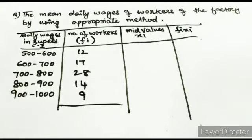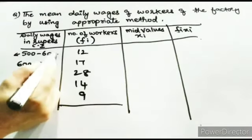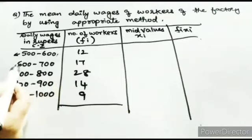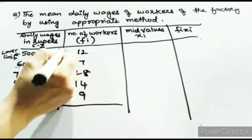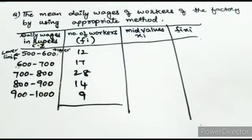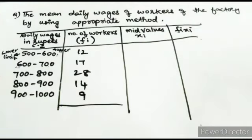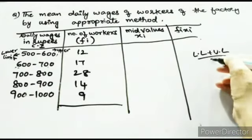How do you find the mid values? Here, this is called the lower limit (LL) and this is called the upper limit. The upper limit of the first observation becomes the lower limit of the second observation. The mid value formula is: mid value = (lower limit + upper limit) / 2.